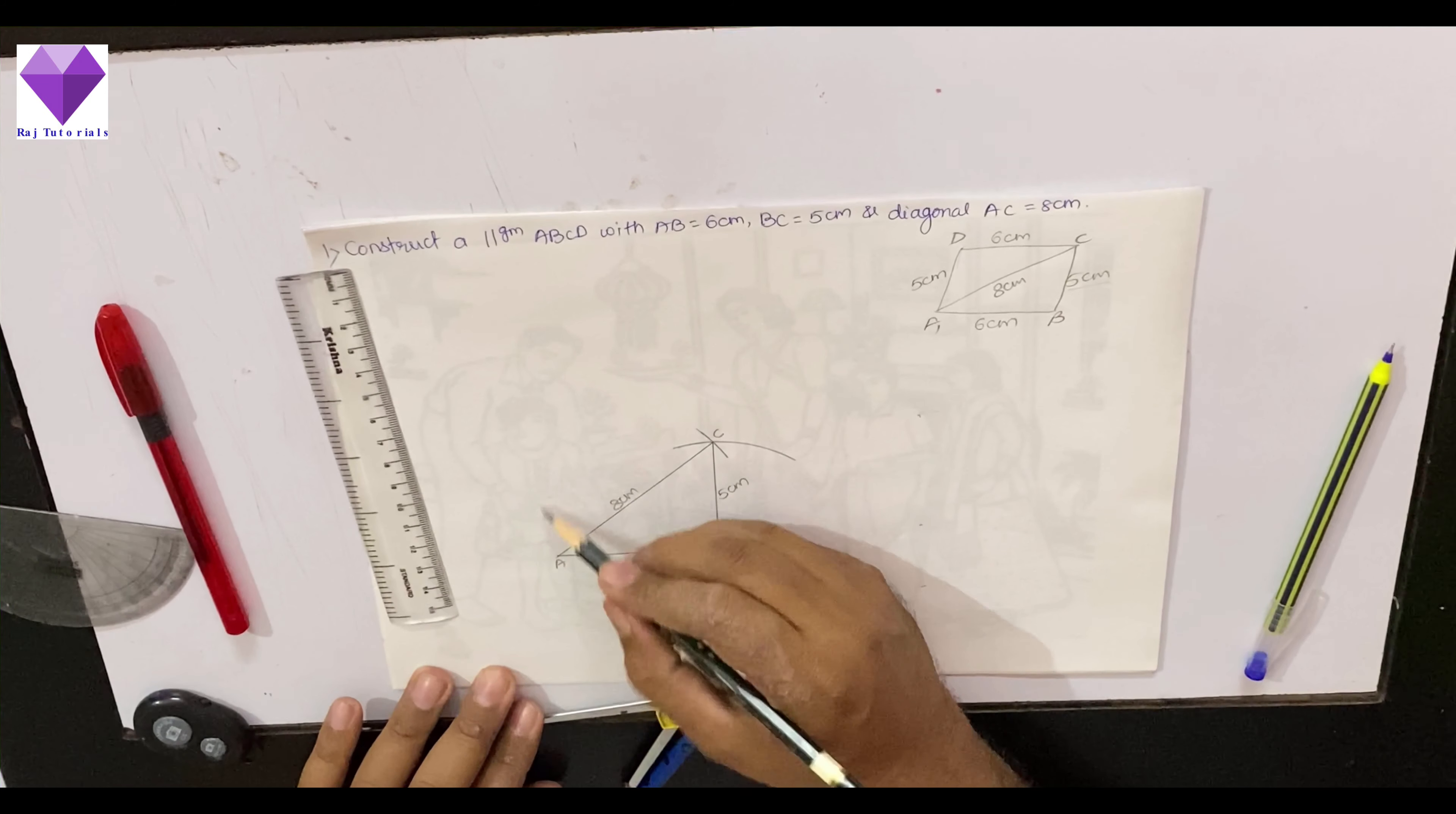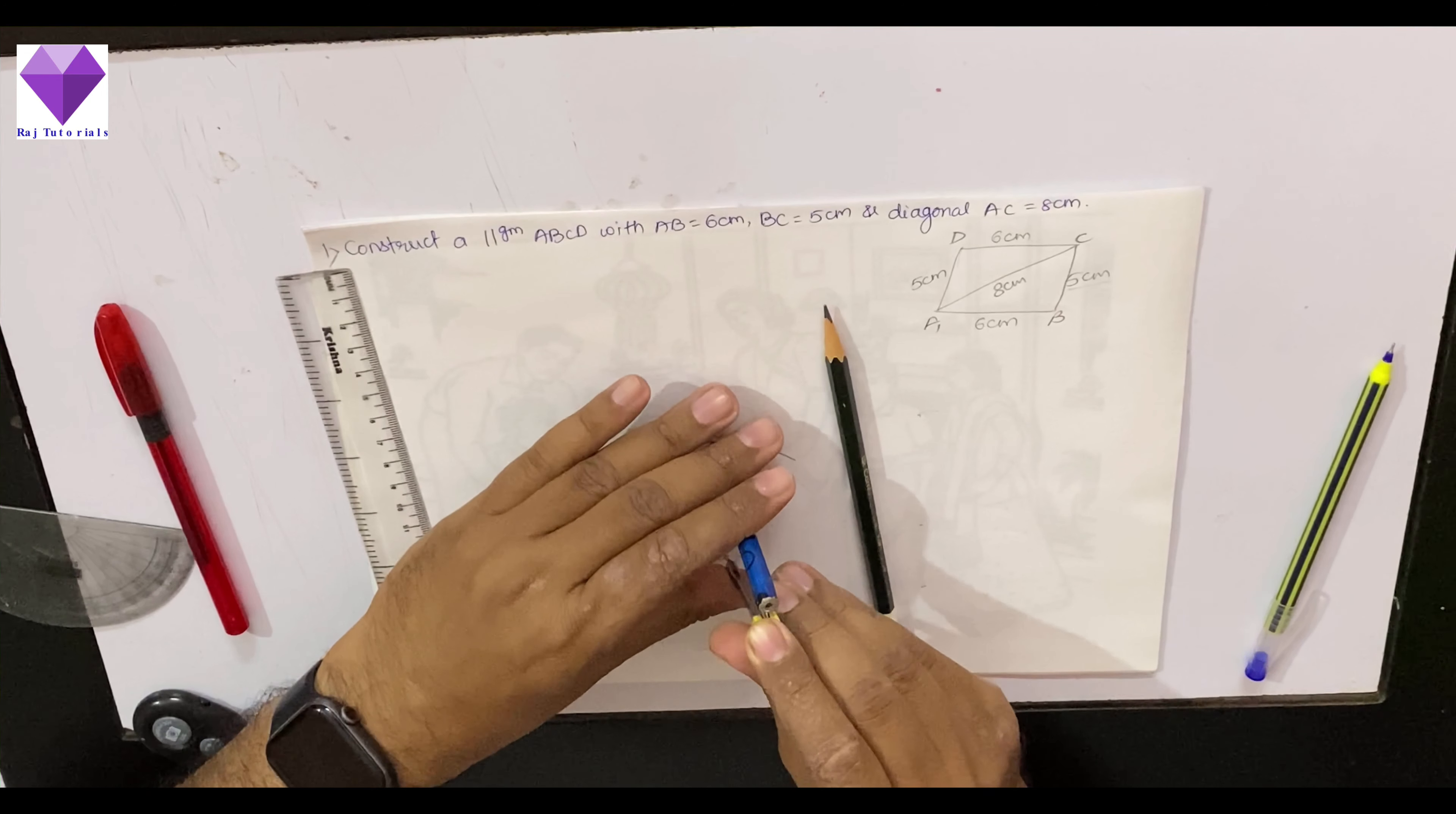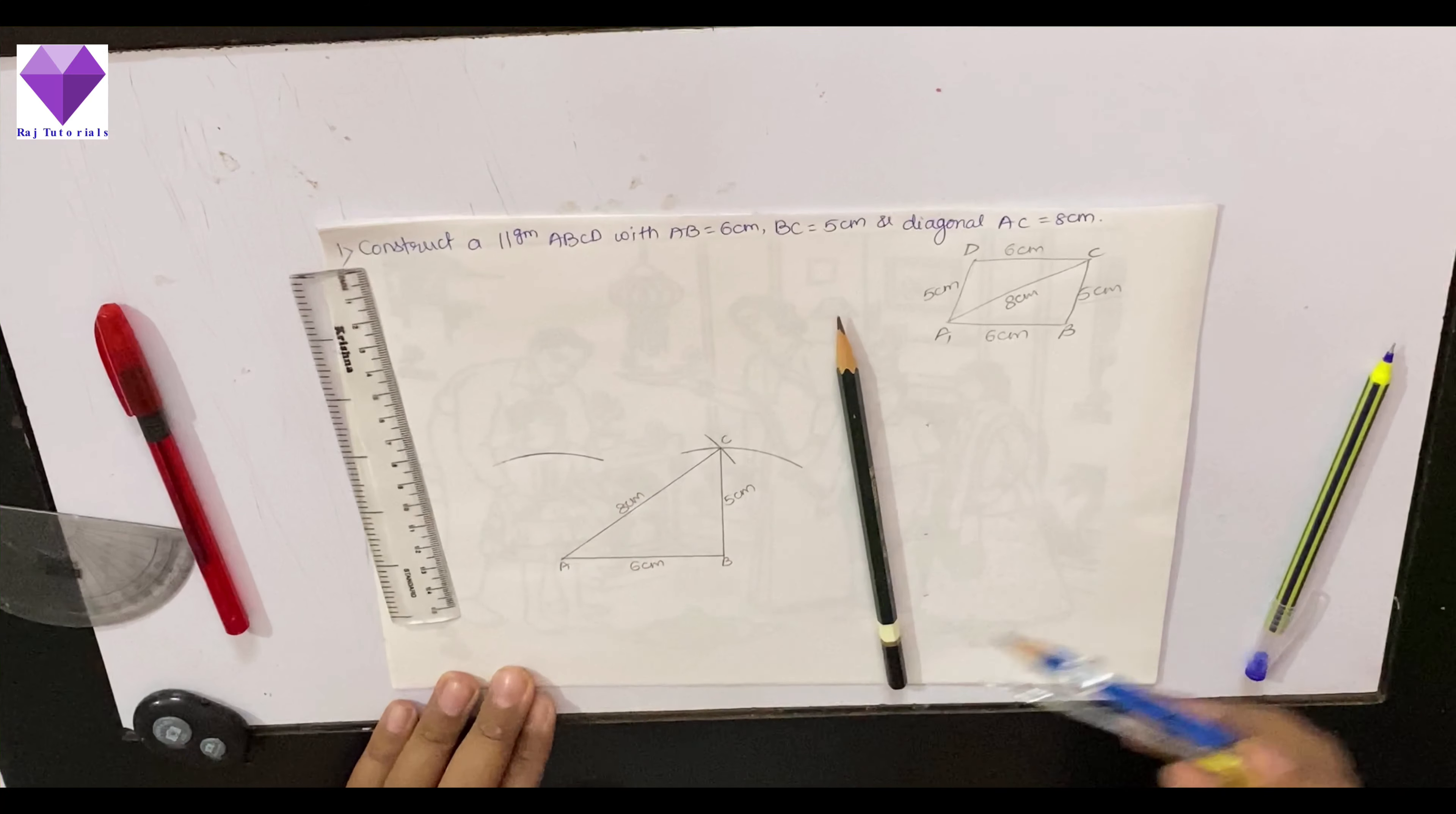Now again, here I need a 5 cm arc. I will measure 5 cm and make an arc there. With A as center and 5 cm, I am drawing an arc.